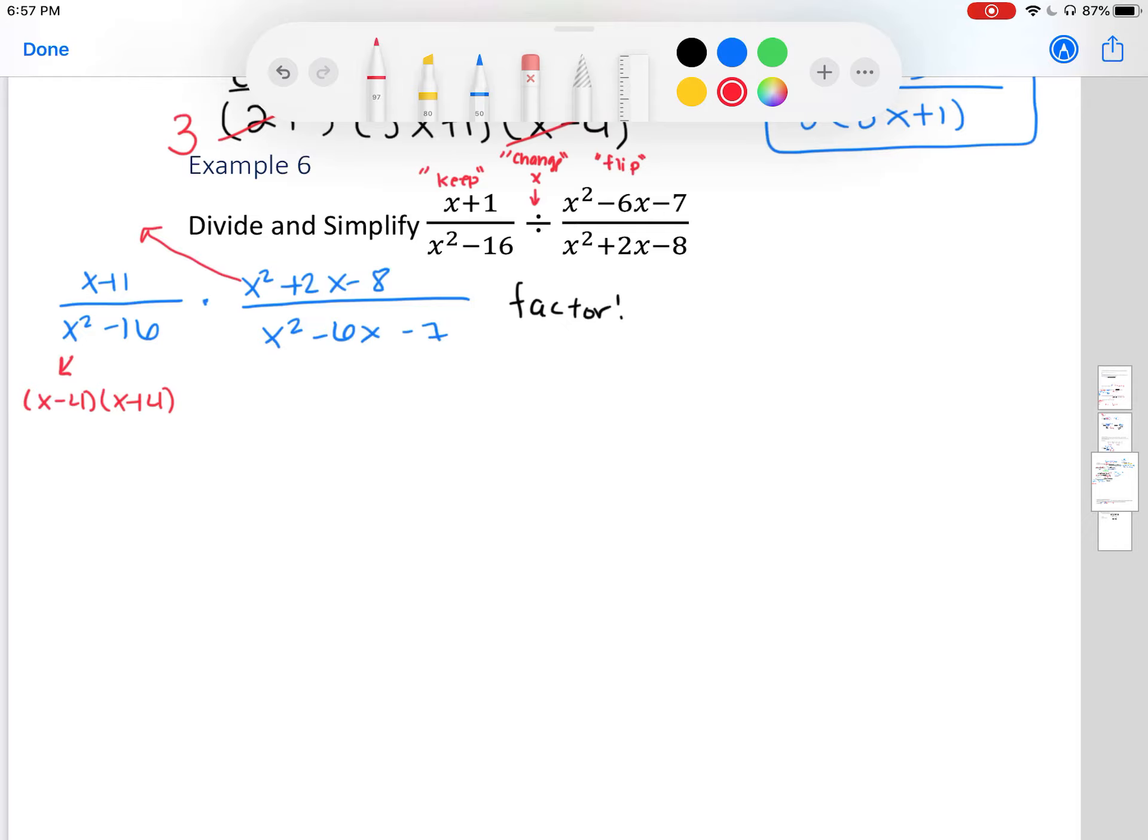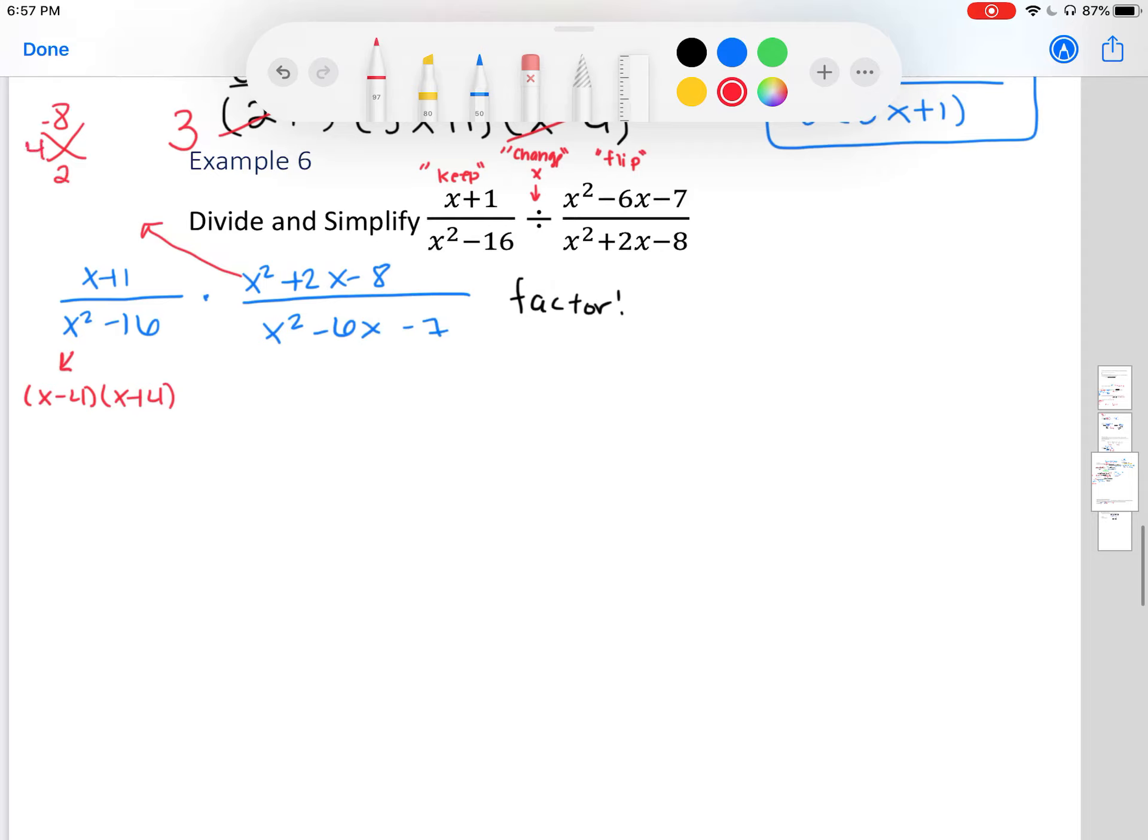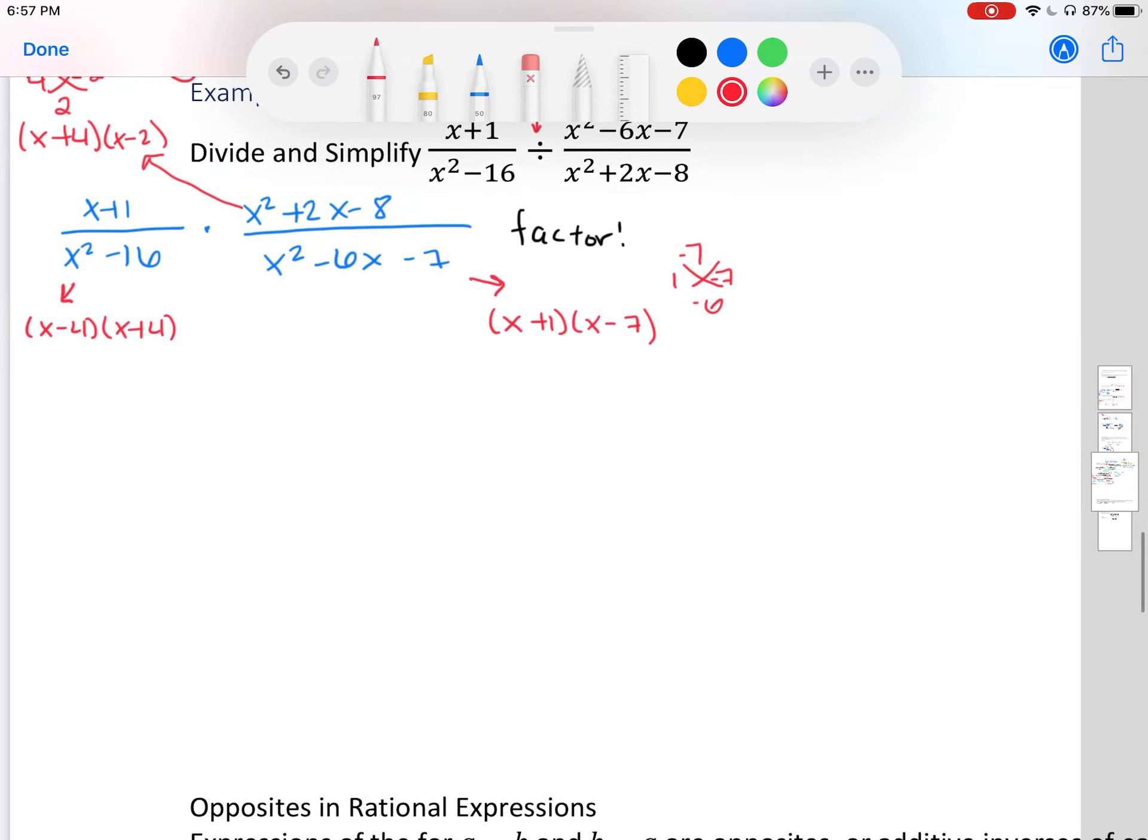Here we have difference of squares. So that factors to be x minus 4 times x plus 4. This one, you want to think what numbers multiply to negative 8 to get positive 2. 4 and negative 2 work. So that factors to be x plus 4 times x minus 2. Working through the other factorizations.